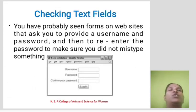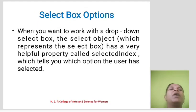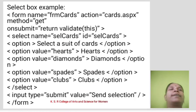Checking text fields: You have probably seen forms on websites that ask you to provide a username and password, and then to re-enter the password to make sure you did not mistype something. Select box option: When you want to work with a dropdown select box, the select box has a very helpful property called selectedIndex, which tells you which option the user has selected.